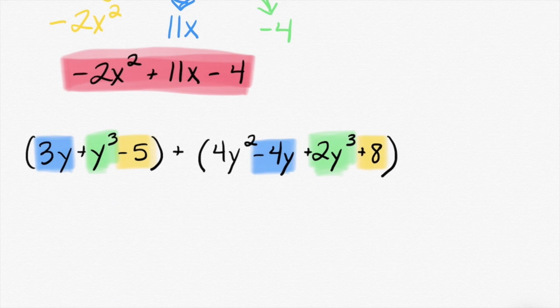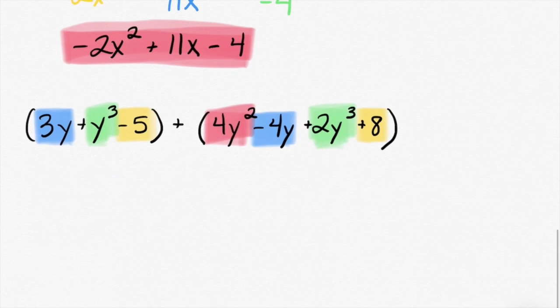And then we're left with this poor guy. The 4y squared doesn't have a buddy. He's just going to be 4y squared all by himself. Okay, so let's put our terms together. So we've got a 3y and a 4y. That's a rainbow. I mean, it's not in order. 3y minus 4y.